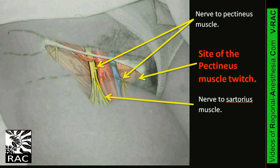Best femoral nerve block success results from performing the nerve block just below the inguinal ligament, before all of this extensive nerve branching occurs. Both nerve divisions are then always blocked.